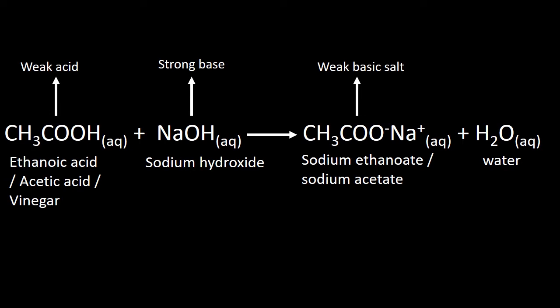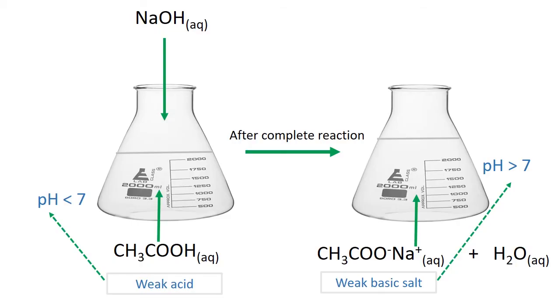Ethanoic acid has other names such as acetic acid and vinegar. If we look more about this reaction, acetic acid is a weak acid, so its pH value should be lower than 7. But after the complete reaction, the pH value will be higher than 7 because sodium ethanoate shows weak basic characteristics.